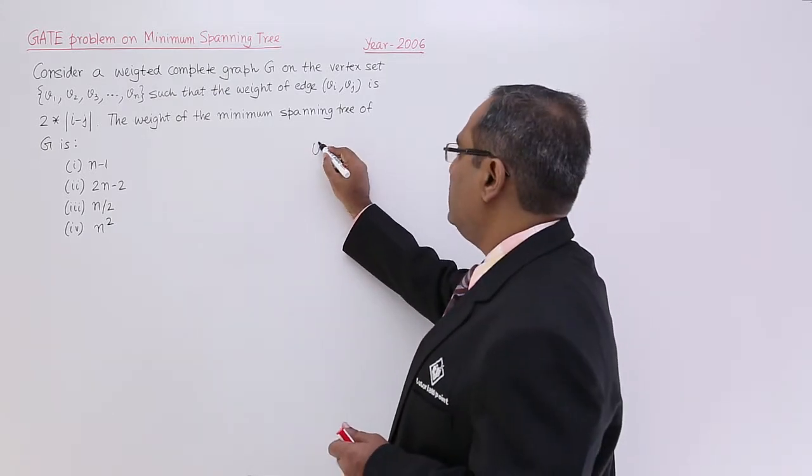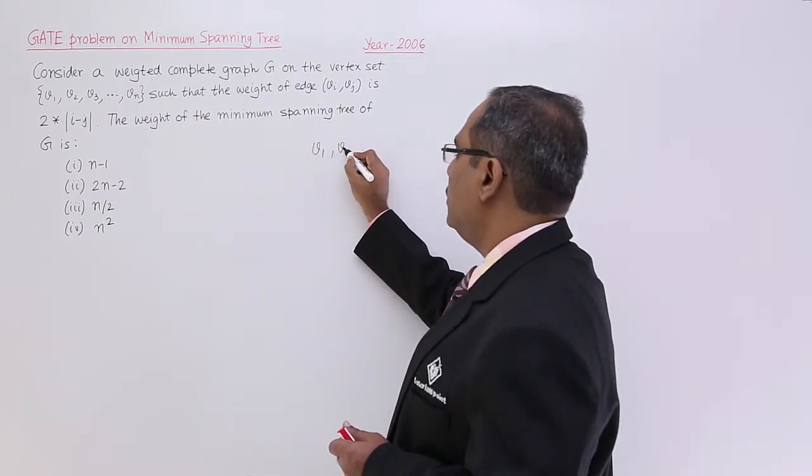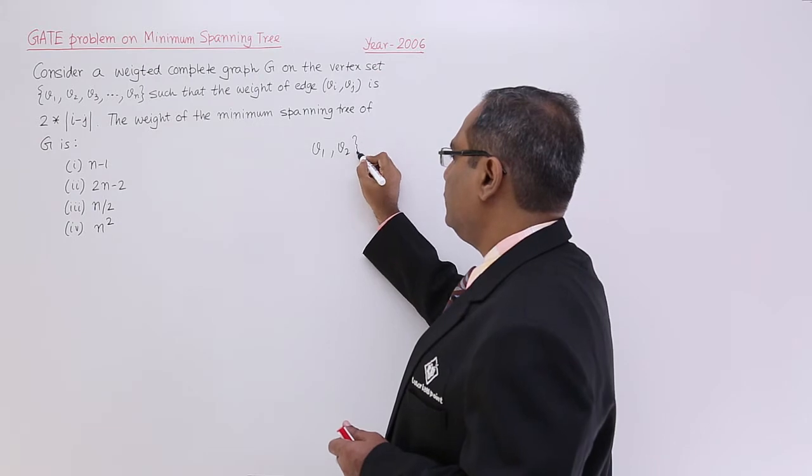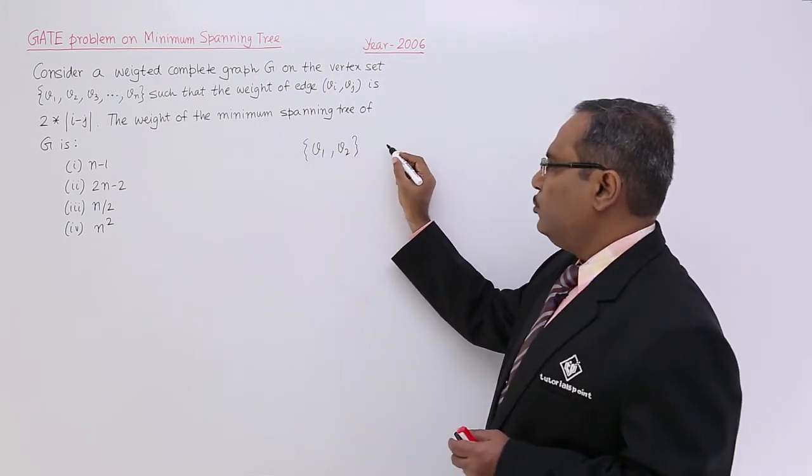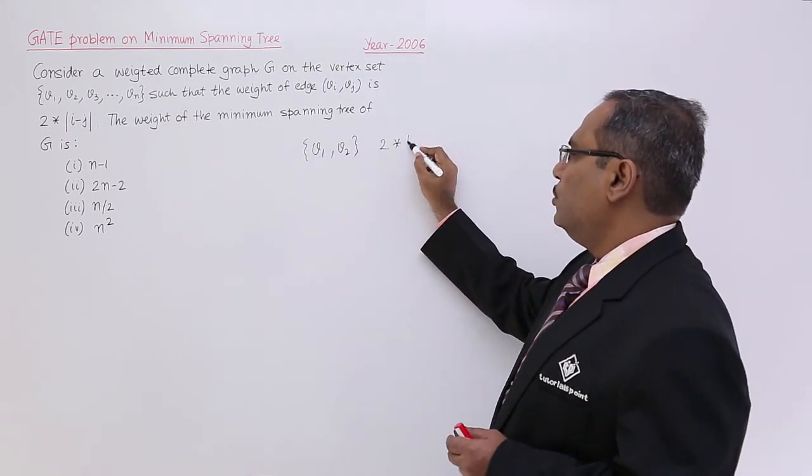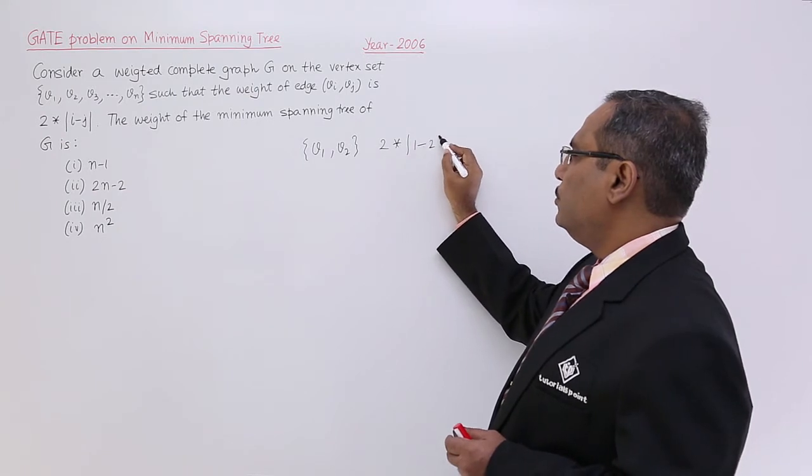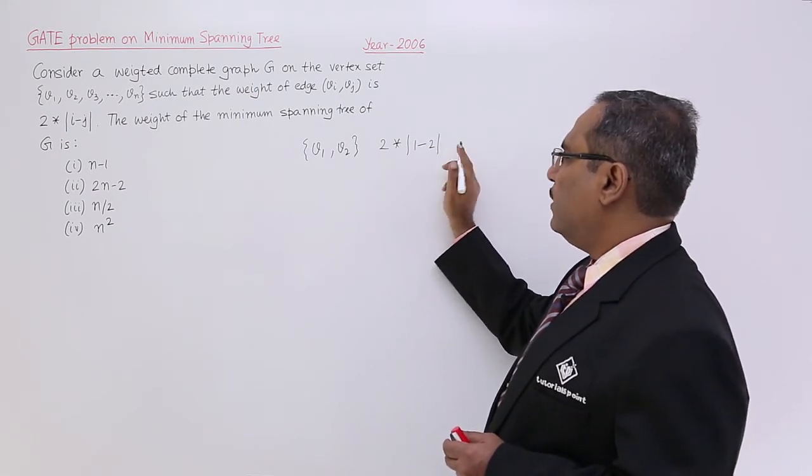I am just trying to say that if you consider V1 and V2, this particular edge, then its weight will be 2 into |1-2|, that is absolute. So that is 1, and that is 2.